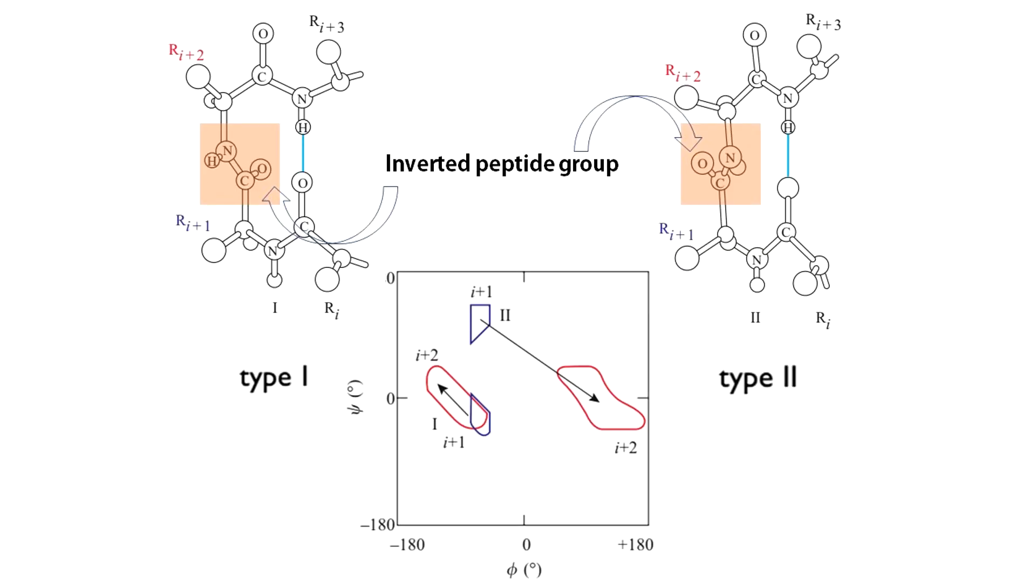There are two basic types of turns type one and type two. The hydrogen bonding pattern remains identical in both. The difference between the two types of turn is an inverted peptide bond. So you can easily understand that phi and chi angles associated with these two types of turns would be entirely different. The difference you can see here in this Ramachandran plot and I guess this is all you need to know to build up your basic concepts.